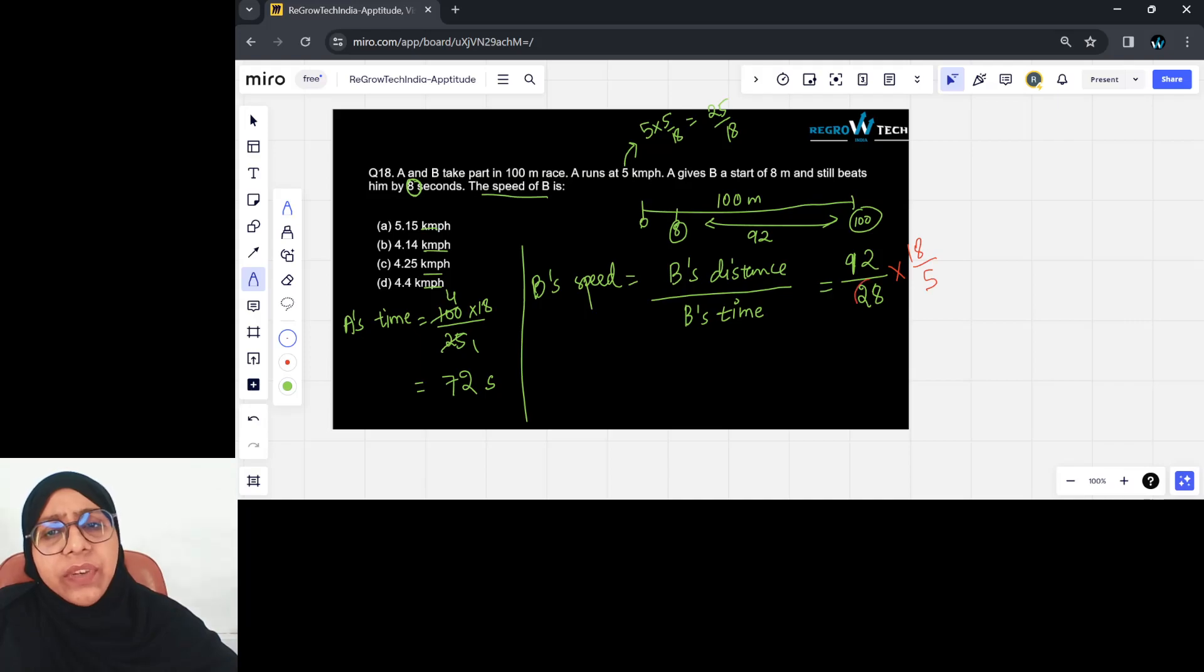Wait, from where did 28 come? 80, right? I am so sorry. Let me just quickly explain how B's time is 80. Because B took 8 seconds more than what A took. A took 72. 72 plus 8, so this is going to be 80. For some reason I said 28. Please don't mind me, I can get a little forgetful.